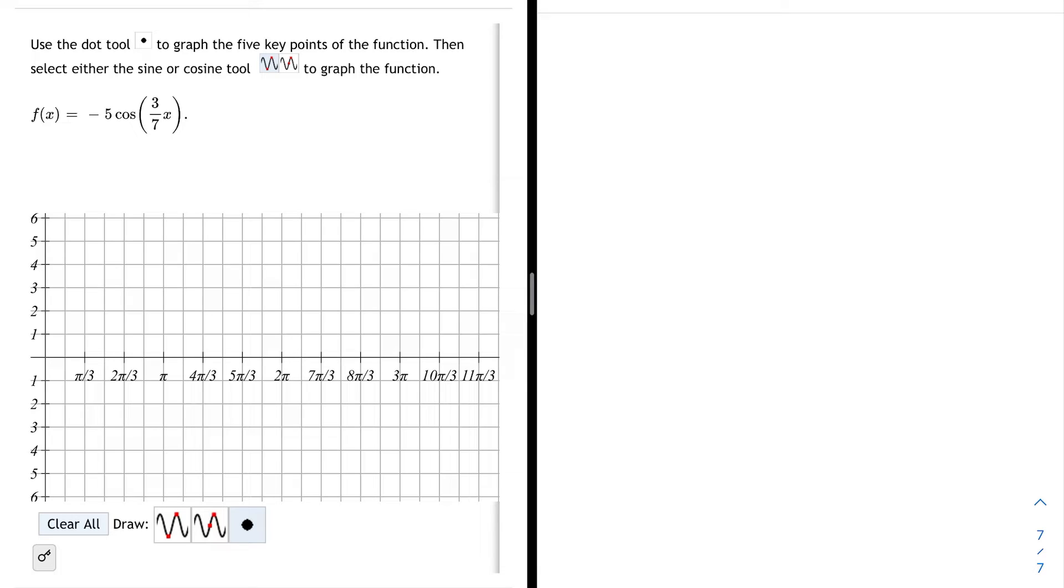Use the dot tool to graph the five key points of the function. Then select either the sine or cosine tool to graph the function. The function is f of x equals negative 5 cosine of 3/7ths x.